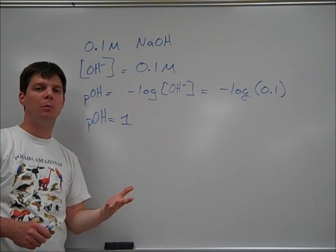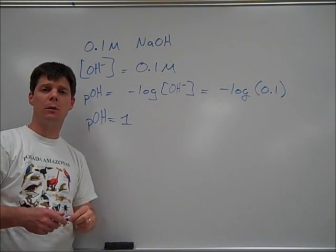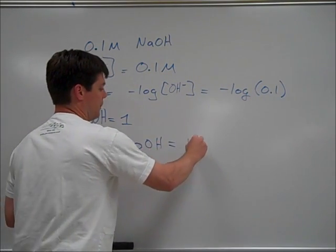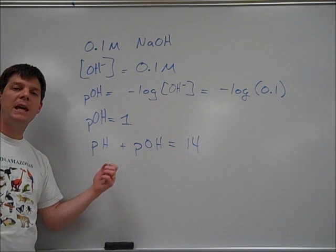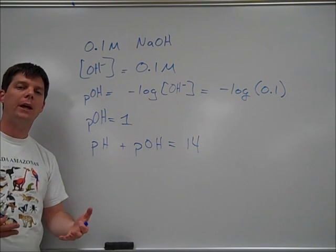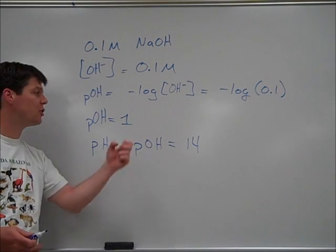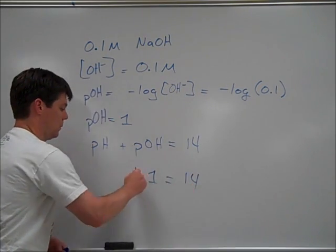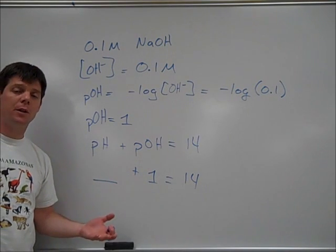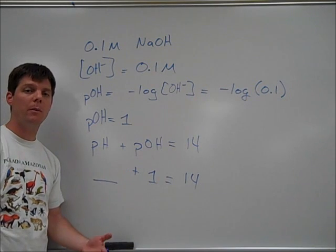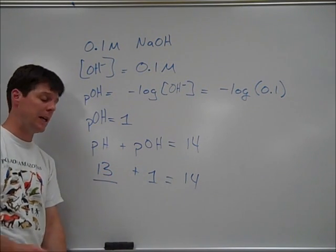Now if we're asked to calculate the pH, we need to have the following relationship in mind. Since pH plus pOH must total 14, we can back calculate the pH as long as we know the pOH. So we're able to determine here that the pH of this 0.1 molar sodium hydroxide would be 13.